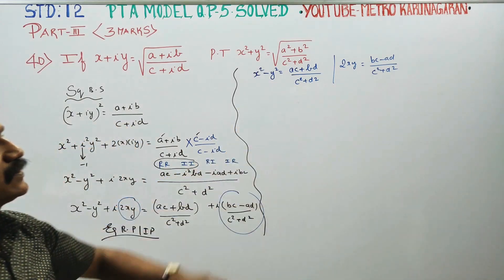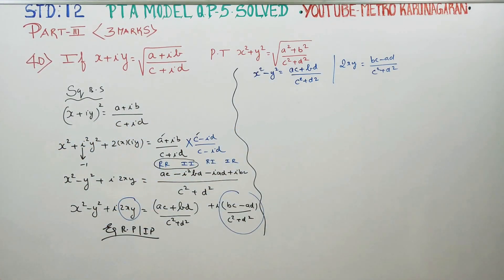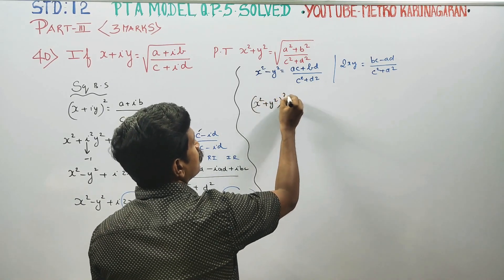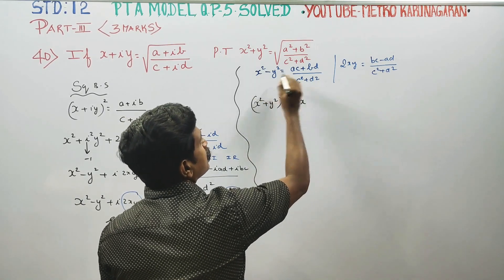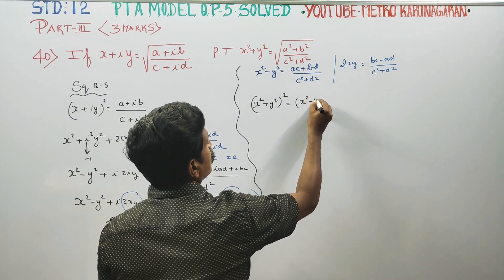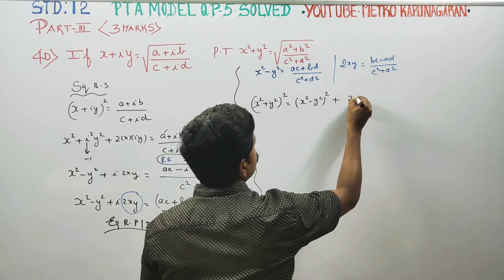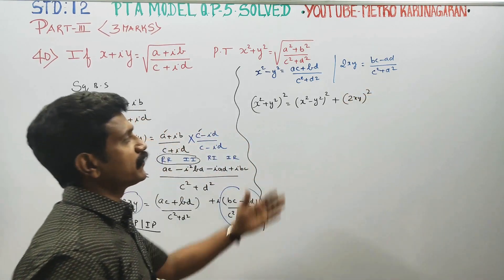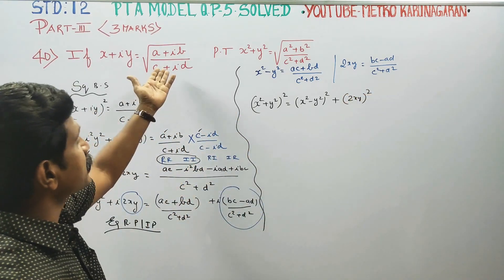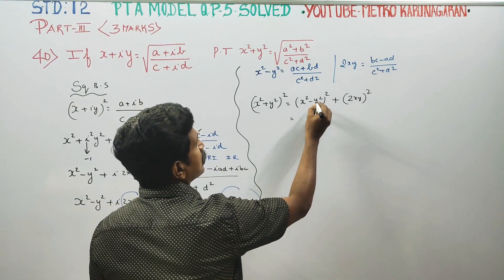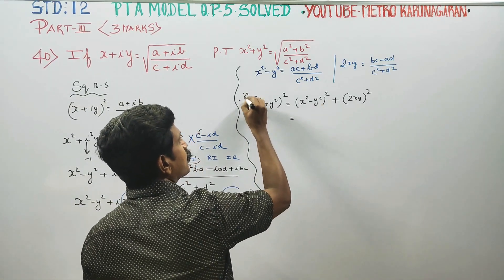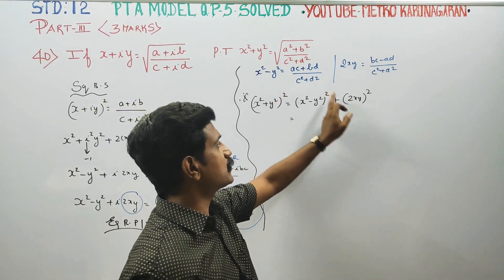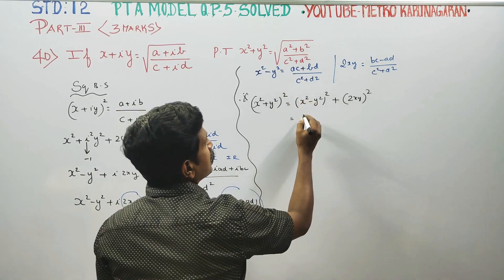Now, x square minus y square and 2xy are known. We use the algebraic identity: x square plus y square whole square equals x square minus y square whole square plus 2xy whole square. Using this formula with the results we found: x square minus y square whole square plus 2xy whole square, we know both values from the formula.